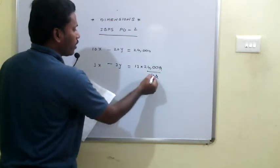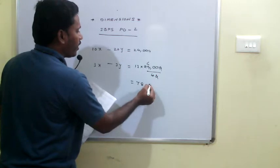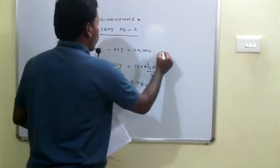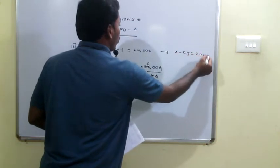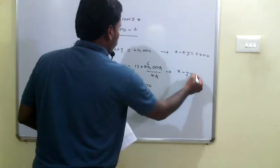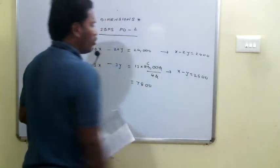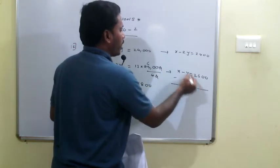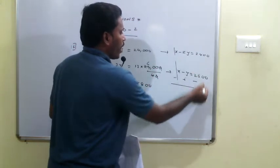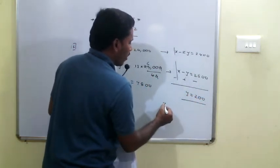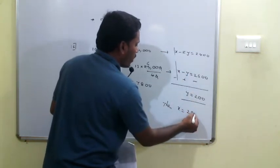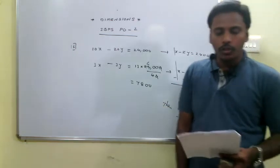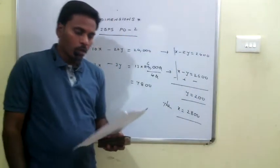Setting up equations: 10x minus 20y = 24,000 and 3x minus 3y = 7,800. Dividing the first by 10 gives x minus 2y = 24,000, and simplifying the second gives x minus y = 26,000. Subtracting, we get y = 2,000 and x = 28,000. Therefore the number of soldiers in the two armies is 10 × 28,000 = 28,000 and 3 × 28,000 = 8,400.